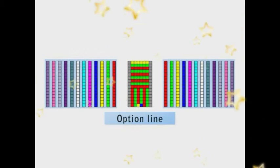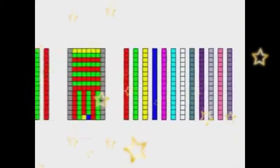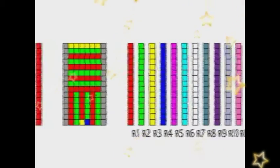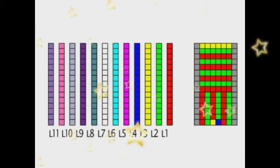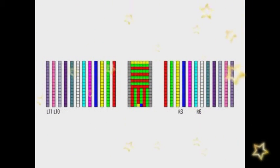Complete each setting on the option line such as yarn carrier to be used and stitch change. From the inside of option line on the right side, R1, R2, and R3. Here the representative option lines R3, R6, L10, and L11 are explained as examples.